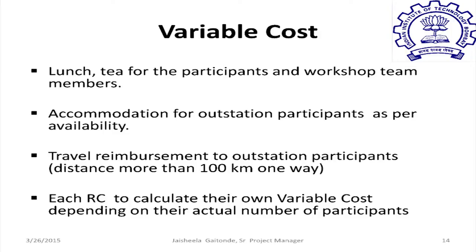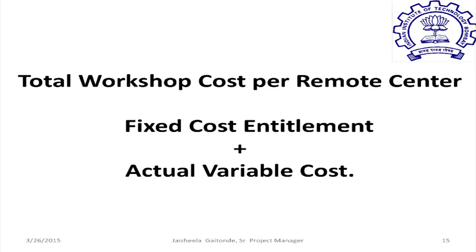The miscellaneous expenses budget is provided for registration kits, stationery, postage, printing, photocopy charges, chartered accountant fees, and other workshop-related expenses. The institute expense budget is rupees 10,000 for each remote centre, given for common facilities provided by your institute such as electricity, infrastructure, and telephone. This amount has to be transferred to the institute account. Under variable cost, we have food, accommodation, and travel reimbursement. All remote centres will arrange lunch and tea for participants and team members. Travel reimbursement for outstation participants is rupees 1,000 for the entire 10-day period, with the criteria that the distance between the participant's place and the remote centre must be more than 100 kilometres one way.